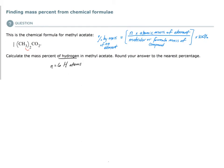What is the atomic mass of hydrogen? We get that from the periodic table. If you find hydrogen — atomic number one — it has an atomic mass of 1.0079 AMUs. So we now have n and the atomic mass of hydrogen.